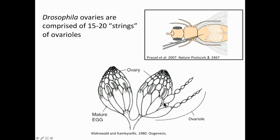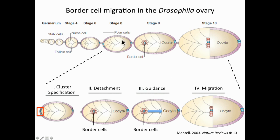My model system is the ovary. Each ovary is comprised of 15 to 20 ovarioles, which have younger egg chambers at the anterior and older at the posterior. This enlarged view of a single ovariole again shows younger egg chambers at the anterior and older at the posterior, and highlights the stages during which border cell migration happens.